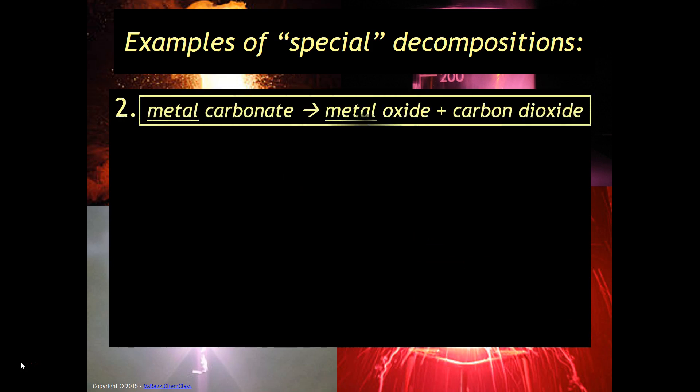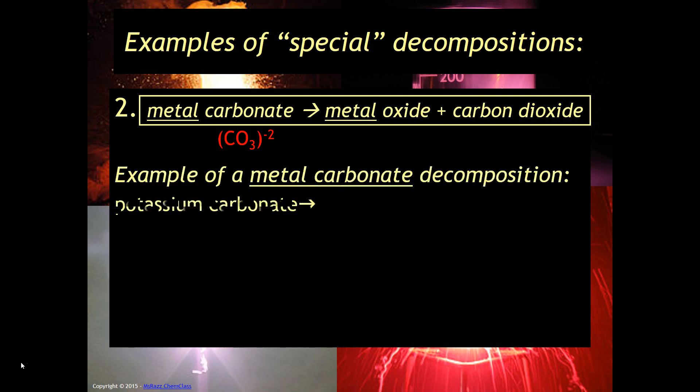Here's another example. A metal carbonate will break down to give you a metal oxide and carbon dioxide. So a carbonate is CO3 with a minus two charge. So for example, if you had potassium carbonate, that is always going to break down into potassium oxide plus carbon dioxide, and that is always going to be part of the product. The only thing that'll change is the name of the metal that is with it.